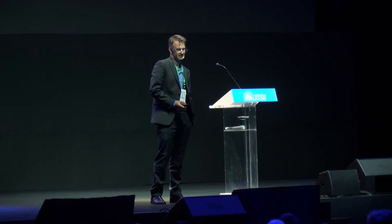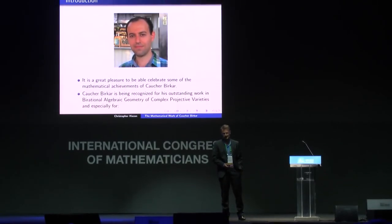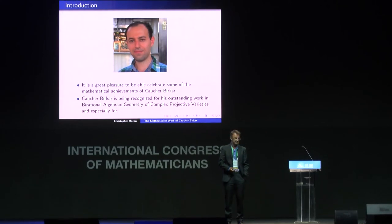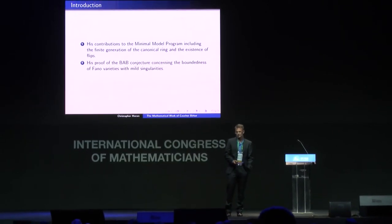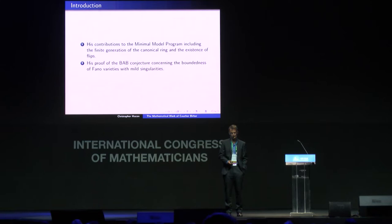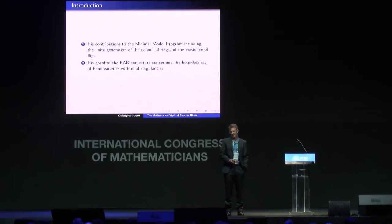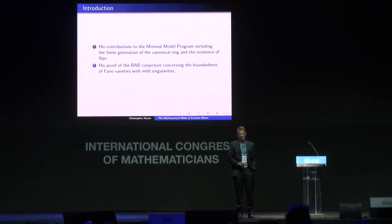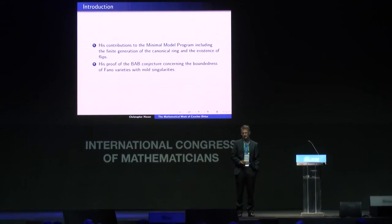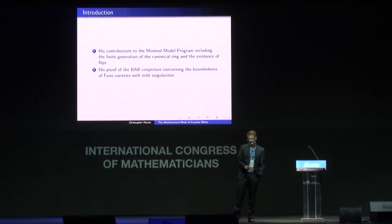It's a great pleasure to celebrate some of the mathematical achievements of Caucher Birkar. Birkar is being recognized for his outstanding work in birational algebraic geometry of complex projective varieties, and especially for his contributions to the Minimum Model Program, which include the finite generation of the canonical ring and the existence of flips, as well as his proof of the Borisov-Alexeev-Borisov conjecture, which concerns the boundedness of Fano varieties with mild singularities.